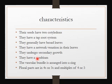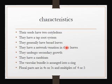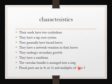They have a cambium, and this cambium is responsible for secondary growth. The vascular bundles are arranged into a ring — in monocotyledonous plants the vascular bundles are just scattered in the stem, but in dicotyledonous plants they are arranged into a ring. Floral parts are in fours or fives and multiples of four or five — so you find the petals are four, five, eight, or ten.